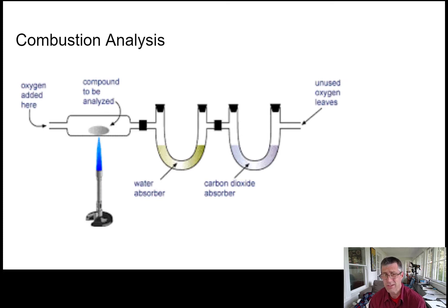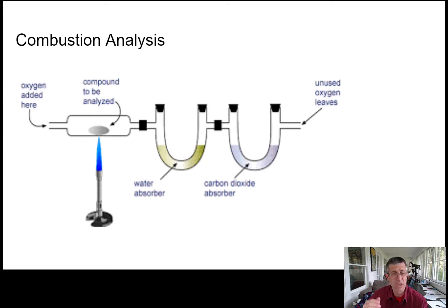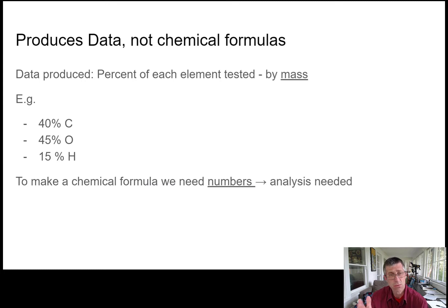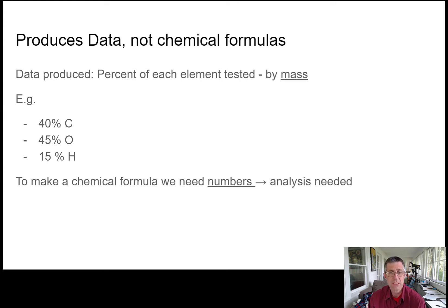For combustion analysis, we very carefully weigh something and then burn it. We measure how much oxygen we put in, and then we very carefully weigh how much water, carbon dioxide, and nitrogen compound comes out. The process is pretty straightforward, but it produces data — not an answer. So what we get out of this is percentages. For example, something that's 40% carbon by mass, 45% oxygen by mass, and 15% hydrogen by mass. Our challenge is how do we get from this information to a chemical formula?